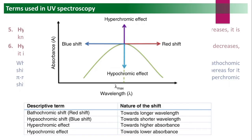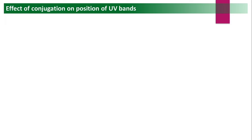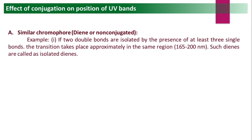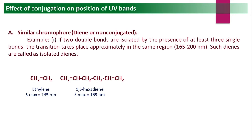Now we will see the effect of conjugation on the position of UV bands. First example: similar chromophores — dienes or non-conjugated alkenes. If two double bonds are isolated by the presence of at least three single bonds (i.e., separated by two or more single bonds), the transition takes place in the same region — 165 to 200 nm. Such dienes are called isolated dienes.